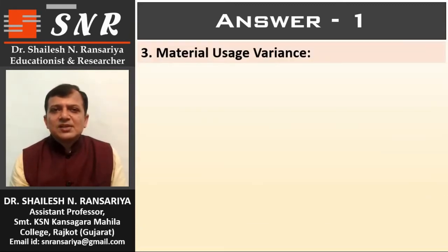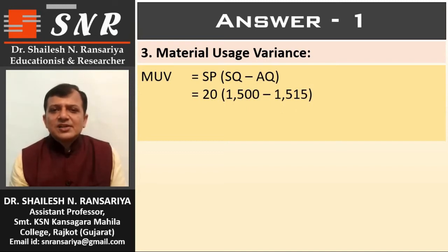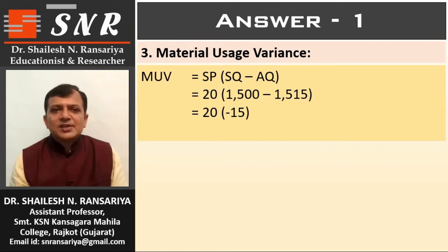Third variance: material usage variance. MUV = SP × (SQ minus AQ). This is the quantity variance, so we use quantity in the bracket, and always standard quantity minus actual quantity. So, SP 20, standard quantity 1500, actual quantity 1515. So, 20 × minus 15. The variance is minus 300 — it means adverse.